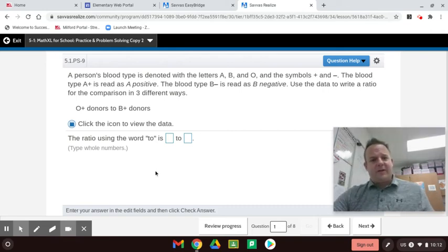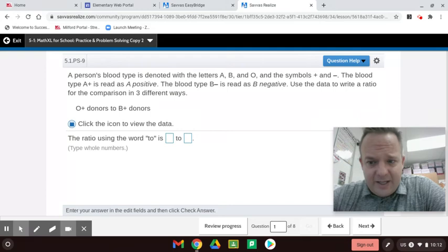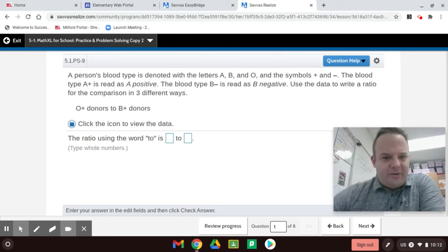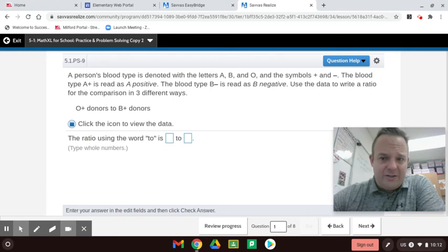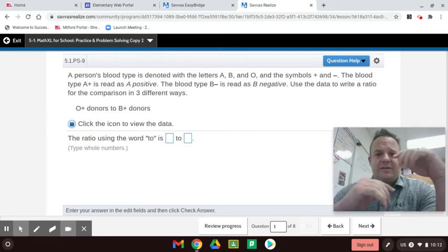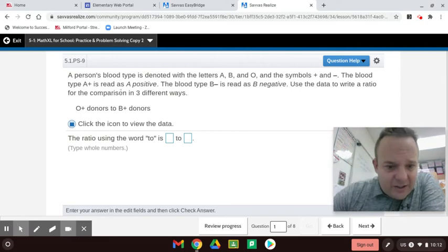Let's go ahead and get started. A person's blood type is denoted with the letters A, B, and O, and the symbols positive and negative. The blood type A positive is read as A positive. The blood type B negative is read B negative. Use the data to write the ratio and the comparison in three different ways. So we can write the ratios in three different ways using a colon, which is two dots, the word to, and then a ratio is also as a fraction.